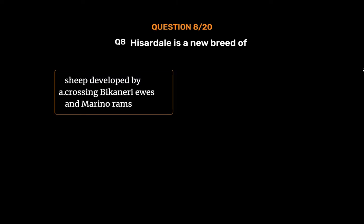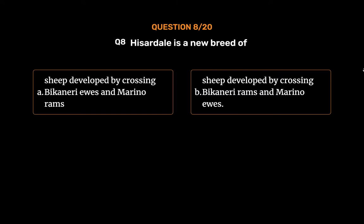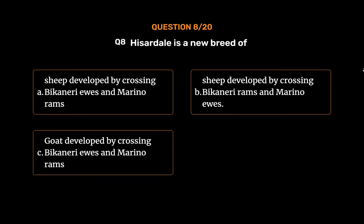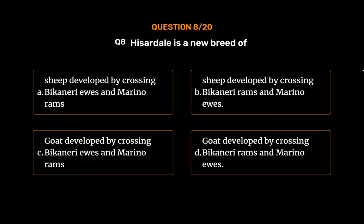Question 8: Hissardale is a new breed of — Option A: Sheep developed by crossing Bikaneri ewes and Merino rams. Option B: Sheep developed by crossing Bikaneri ewes and Merino ewes. Option C: Goat developed by crossing Bikaneri ewes and Merino rams. Option D: Goat developed by crossing Bikaneri ewes and Merino ewes. The correct answer is Option A: Sheep developed by crossing Bikaneri ewes and Merino rams.